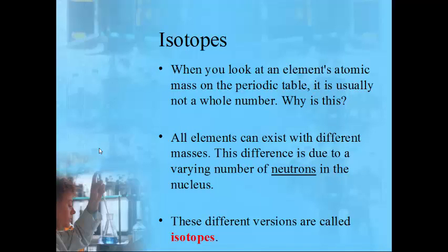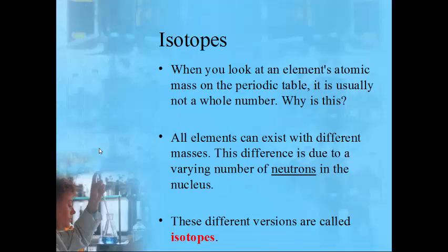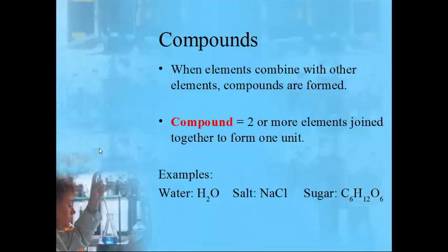The atomic mass is usually a decimal number because all elements can exist in more than one format — versions with different masses. For lithium, if you took the average weight of all known lithium atoms, you'd get 6.94. The reason some forms of an element have different masses is due to a different number of neutrons. These different versions of an element are called isotopes.